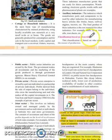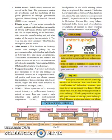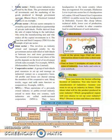Last is classification based on ownership — very, very important. This includes public sector, private sector, joint sector, cooperative sector, and MNCs. This is a very important topic of this chapter. I want you all to focus on this. Out of all the classifications, the most important are classification on the basis of raw material and classification on the basis of ownership.